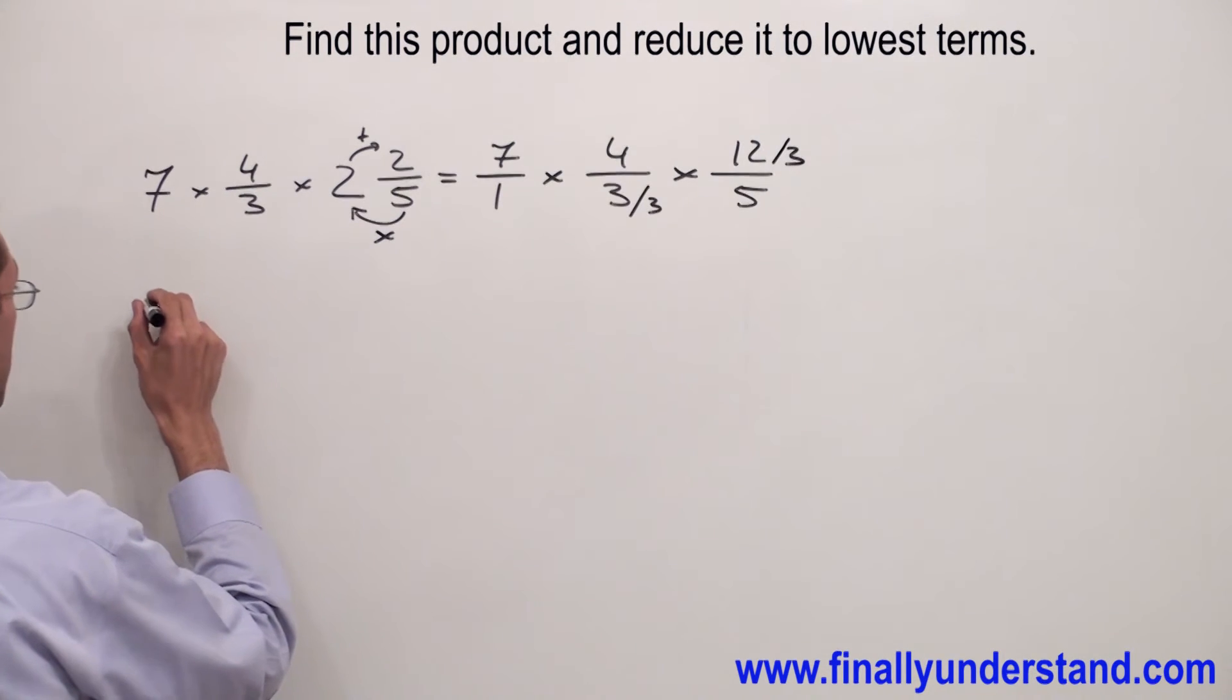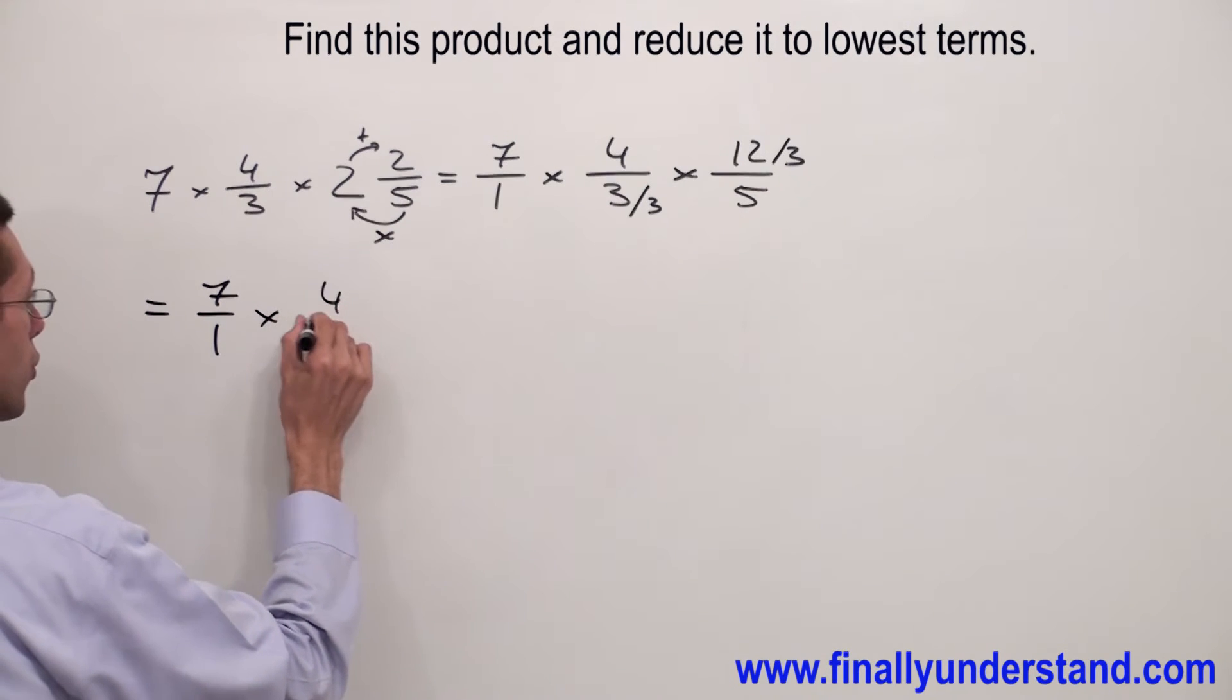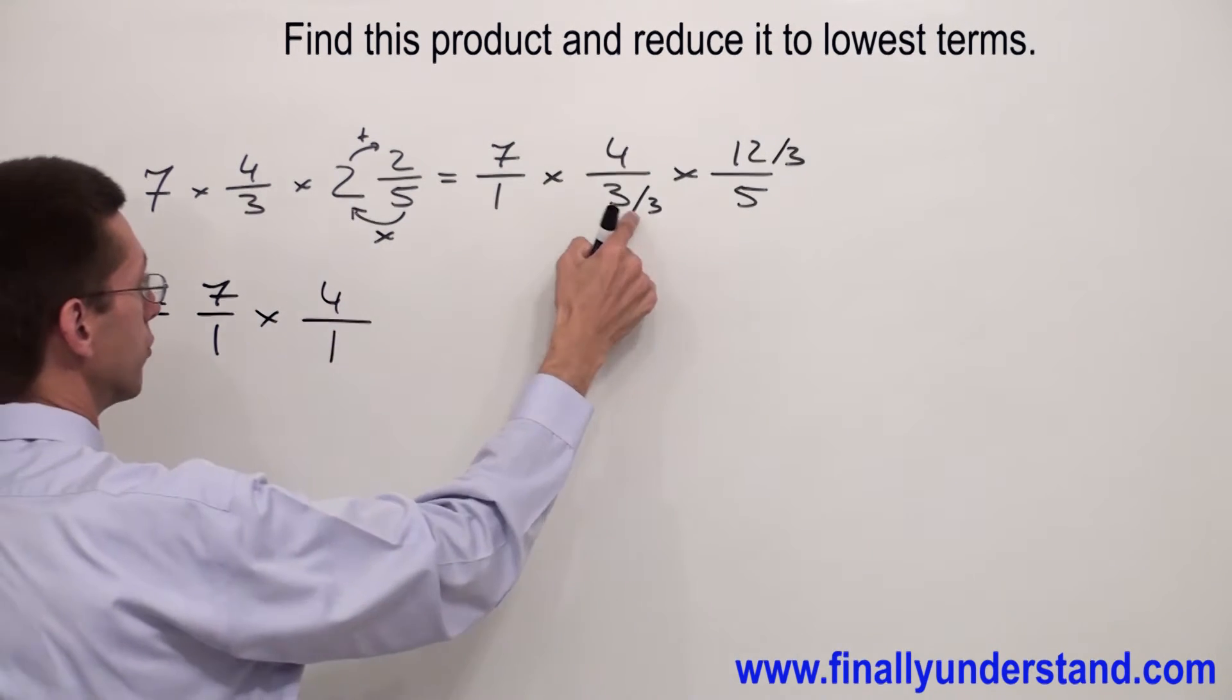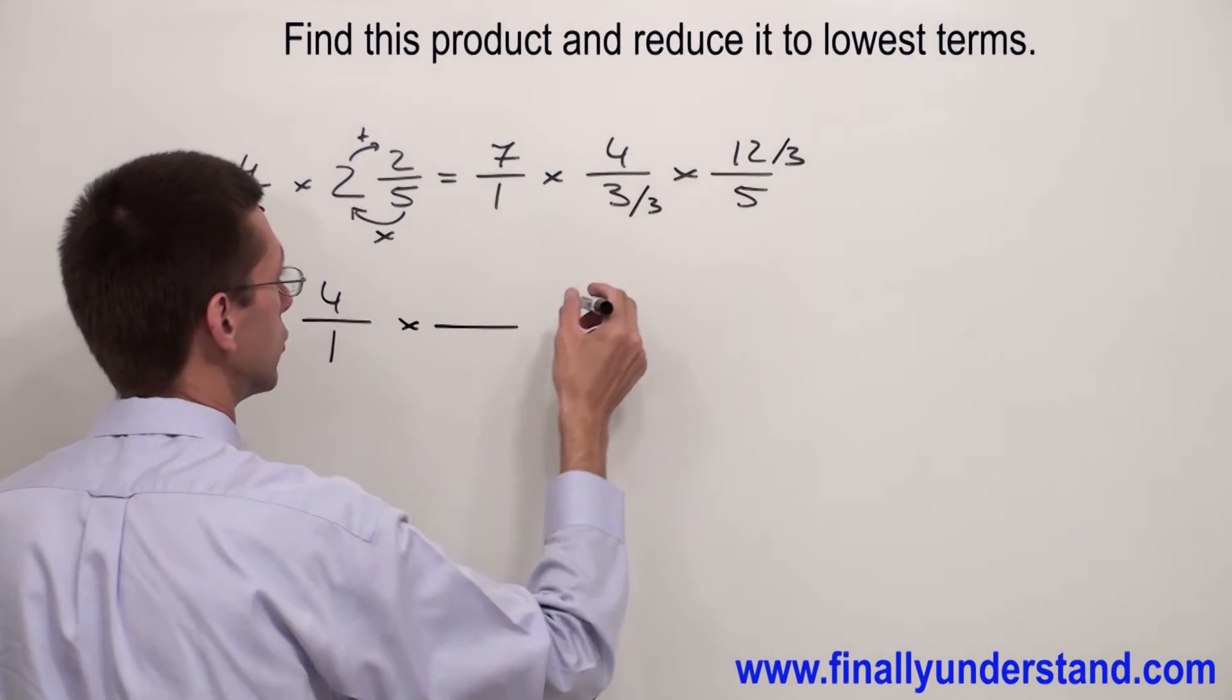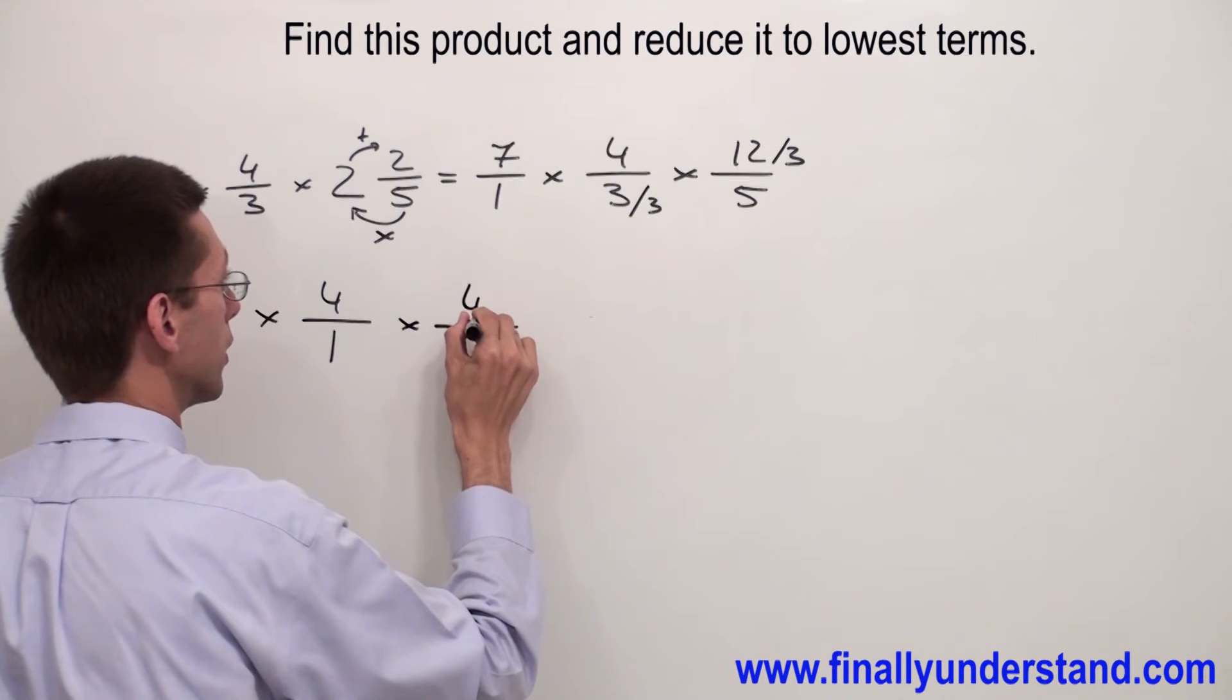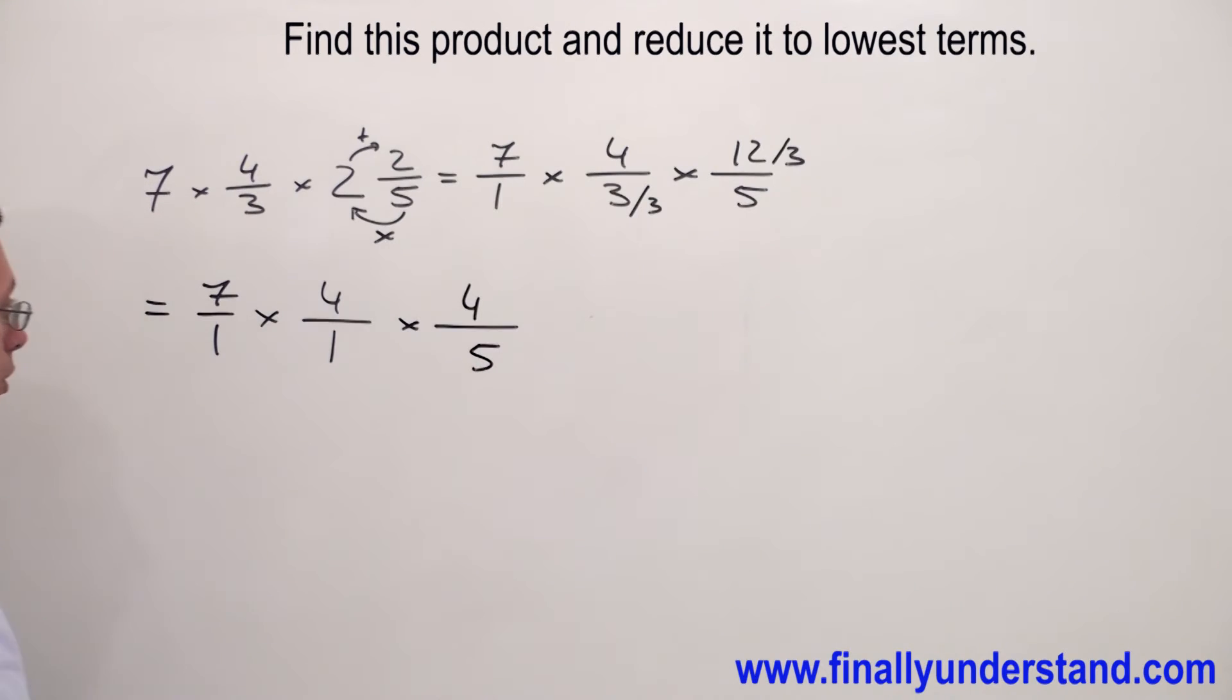I'm going to have 7 over 1 times 4 over 1, because 3 divided by 3 is equal 1, times 12 divided by 3 is equal 4 over 5. I cannot reduce anything else over here.